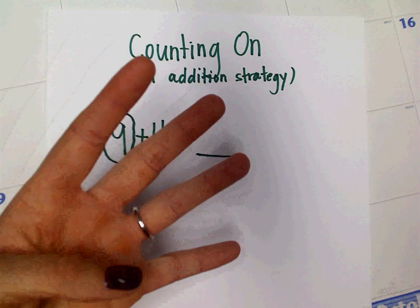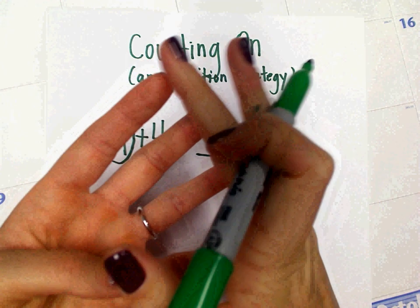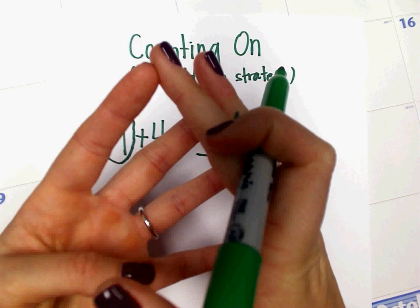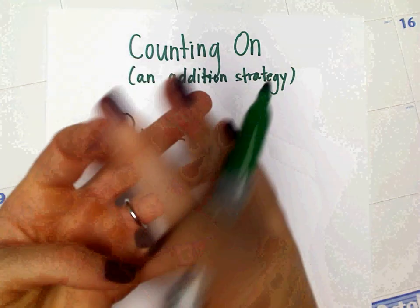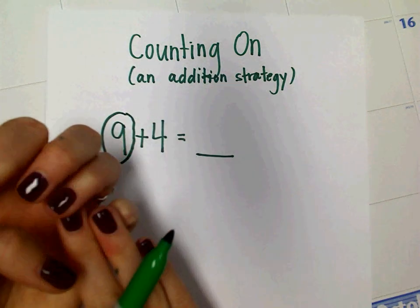So I'm going to tap my head and say 9. Then I'm going to push down every finger as I count on. So 9, 10, 11, 12, 13.